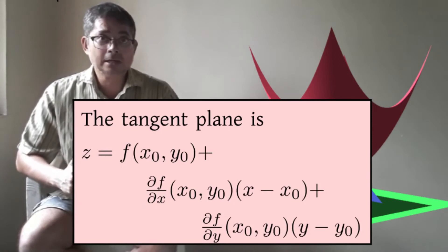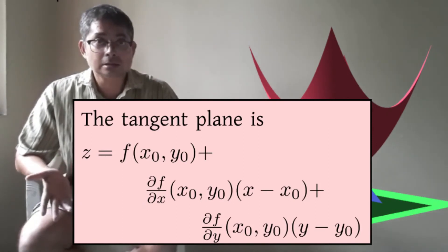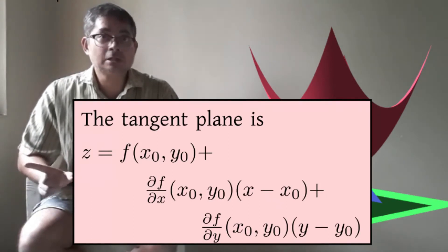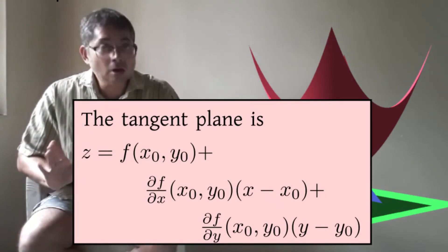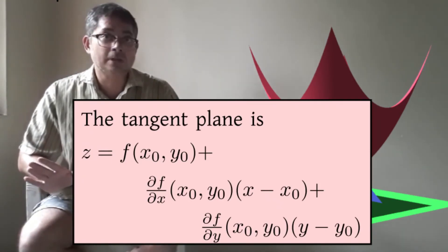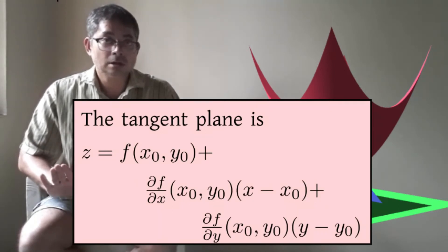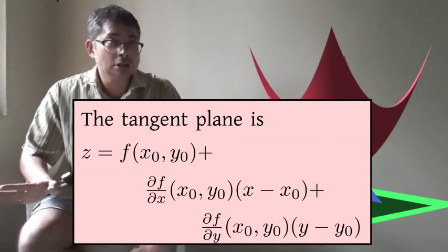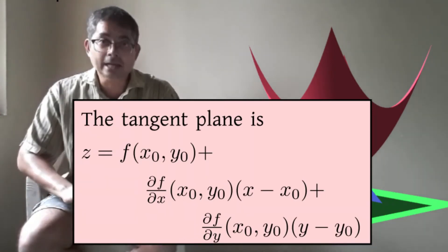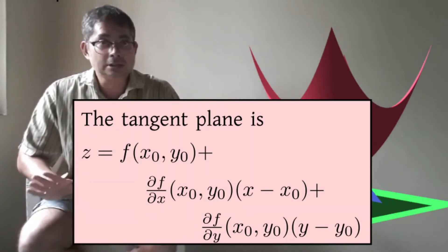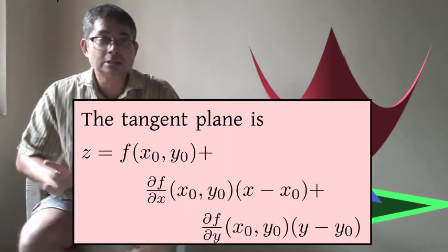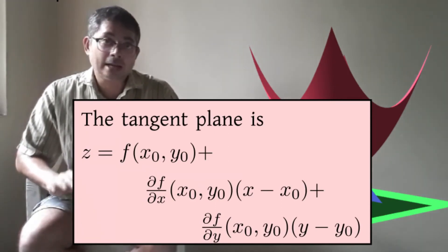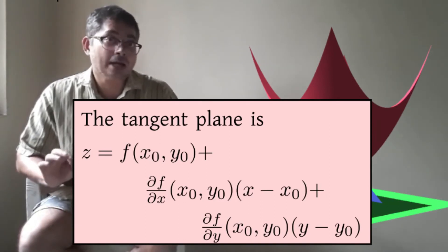How can it be that the tangent plane formula exists yet the function is not differentiable? In fact, this particular formula may not be the tangent plane if f does not satisfy certain other conditions. If those conditions are satisfied, then this will be the tangent plane. So the mere existence of the two partial derivatives is not enough to guarantee differentiability of f.